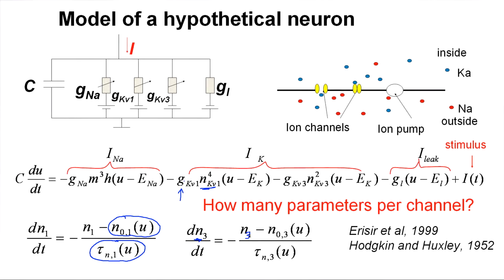If the parameters of each ion channel are known, then we can build an arbitrarily complex model once we know the presence and the density of ion channels in the membrane.